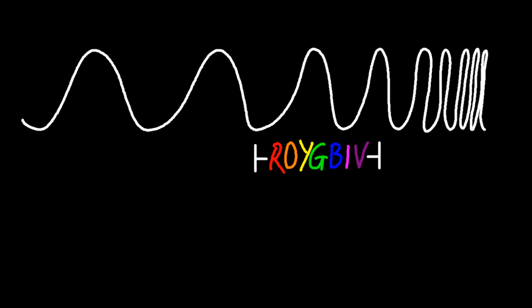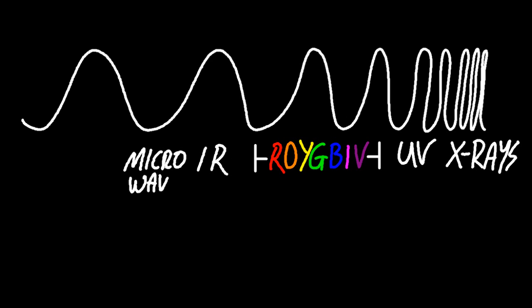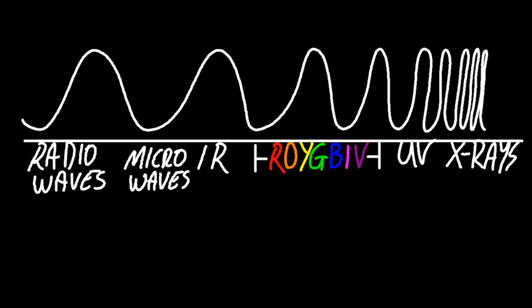Now at slightly higher energies on the right-hand side, we've got ultraviolet and then x-rays. You don't need to know about gamma rays. And at lower energies, past infrared, we have microwaves and finally radio waves.